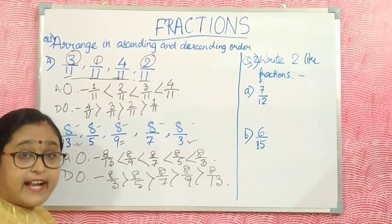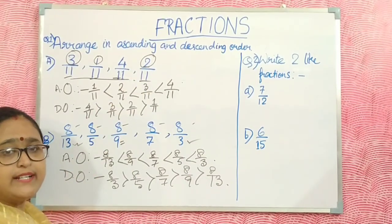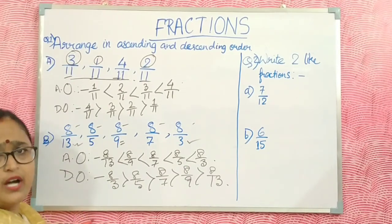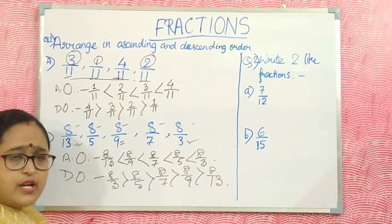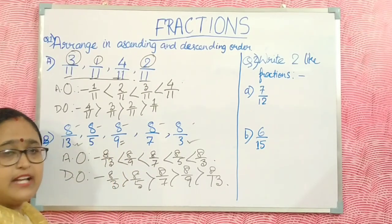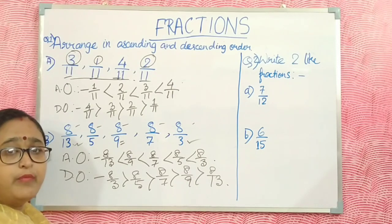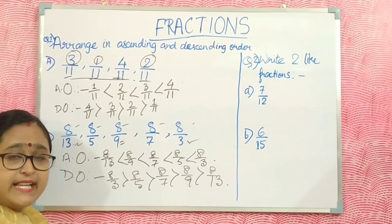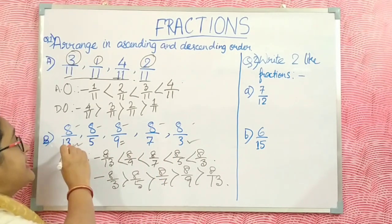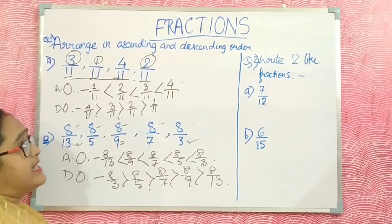To summarize: when like fractions arise, observe the numerator — numerator is least means fraction is least; numerator is greatest means fraction is greatest. When the question is unlike fractions and the numerator is same, denominator is least means the fraction is greatest; denominator is highest means the fraction is smallest.